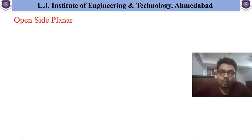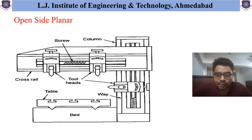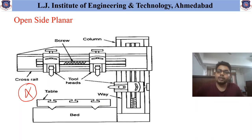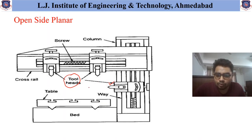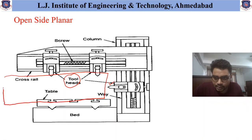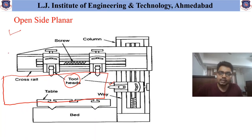The next type is the open side Planner Machine. As one can see, one side of this Planner Machine is open, and that's why it is called the open side Planner Machine. All similar parts are available as in a normal Planner Machine, but here two vertical tool heads and one side tool head are provided. This machine is used when the length of the workpiece is very large and difficult to hold in the double housing Planner Machine.